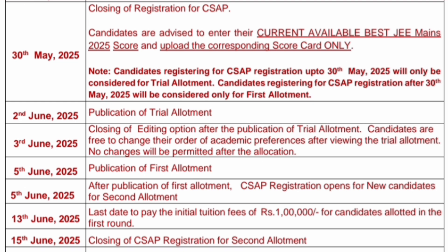All those who have not seen the dates, please remember: 30th May 2025 is the last date for registration for CSAP. CSAP candidates are advised to enter their current available best JEE Mains 2025 score and upload the corresponding scorecard only — upload the one showing the best of your two scorecards.